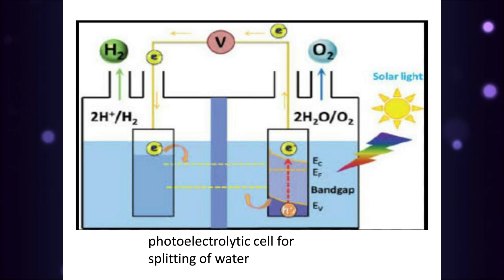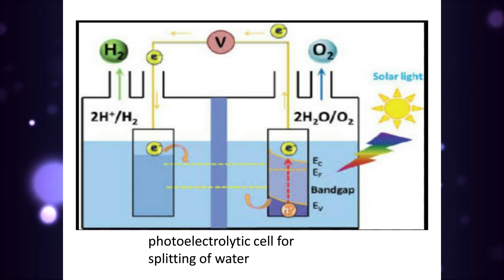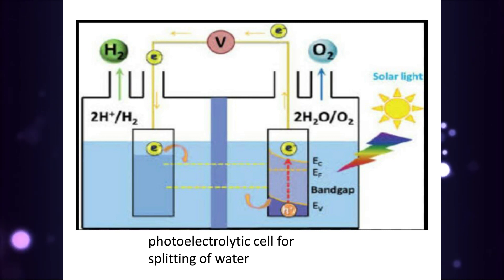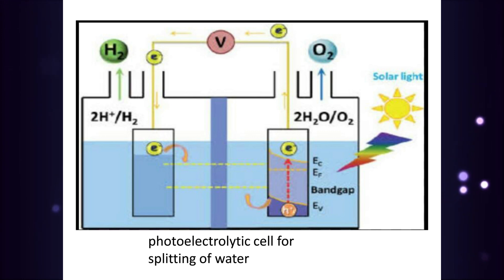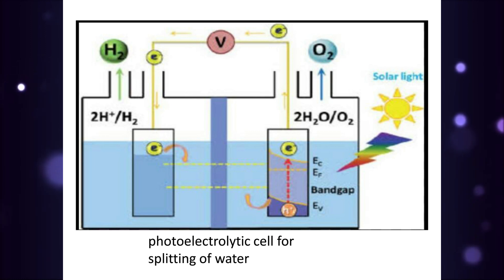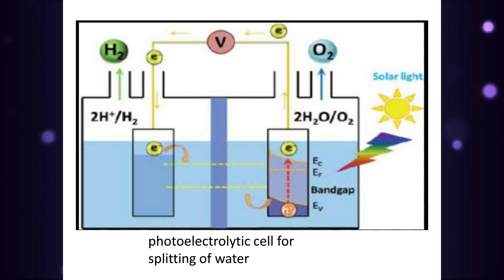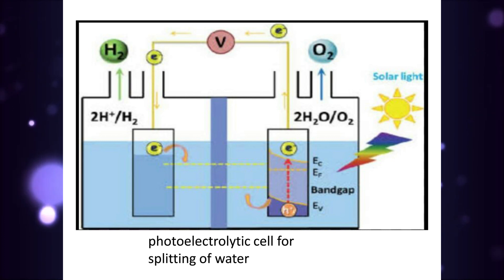The process of the photoelectrolytic cell is as follows: two electrodes are immersed in an aqueous electrolyte, of which at least one is made up of a semiconductor, exposed to light and able to absorb light. The electricity generated is used for water electrolysis.